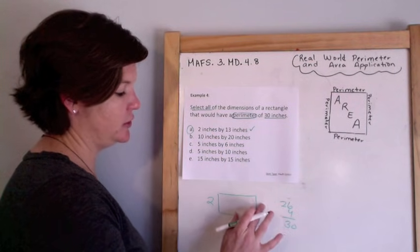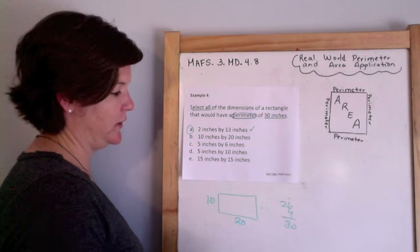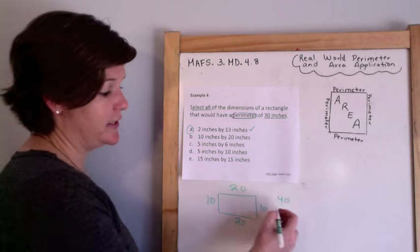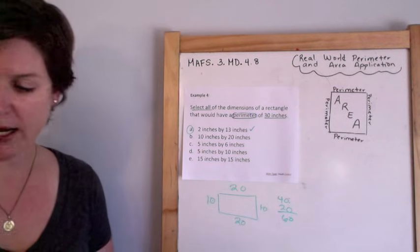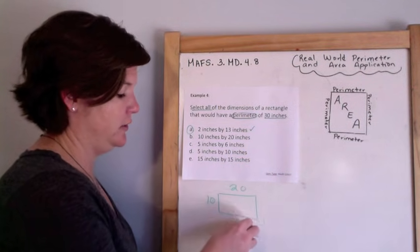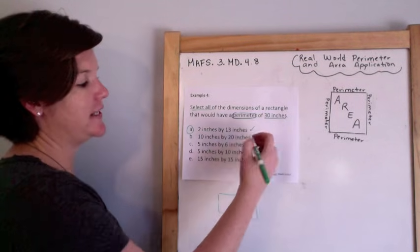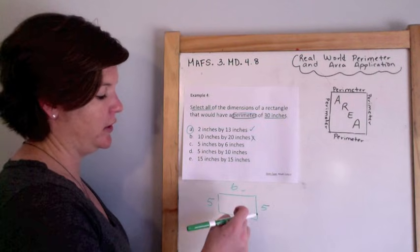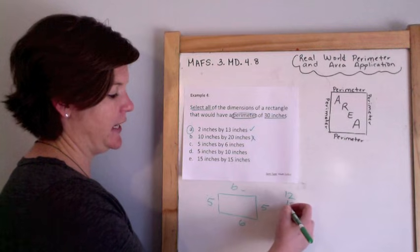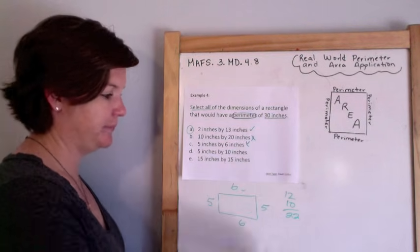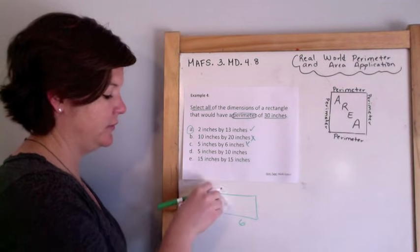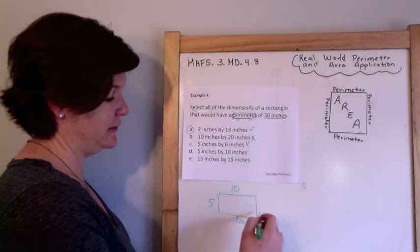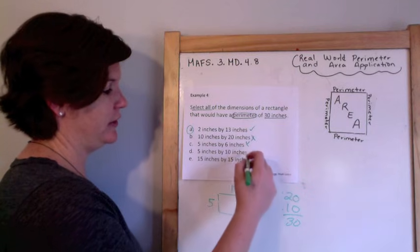Let's try 10 by 20: 20 plus 20 is 40, 10 plus 10 is 20 — that's 60 inches, way too high, so that's not going to work. I'll put an X there to eliminate it. Now 5 inches by 6 inches: 6 plus 6 is 12, 5 plus 5 is 10, that would be 22 — not enough, I need 30. Now 5 by 10: 10 plus 10 is 20, 5 plus 5 is 10, that's 20 plus 10 which is 30. That's right!